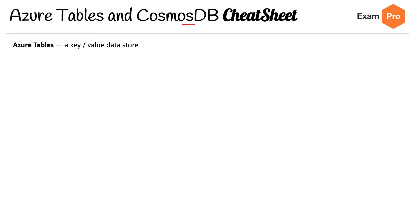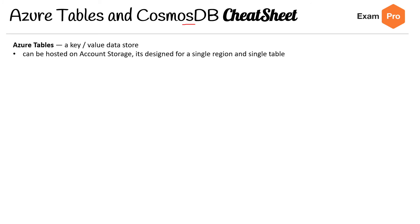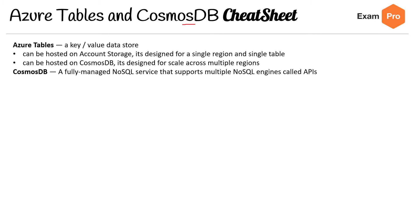So let's start at the top here. Azure Tables: it's a key-value data store that can be hosted on either Azure storage account storage — it is designed for a single region — and a single table can be hosted on Cosmos DB, and when it's hosted there it's designed for scale across multiple regions.